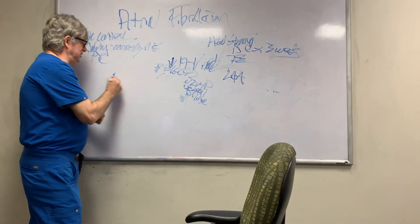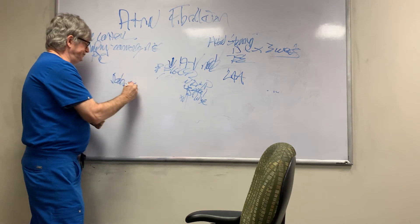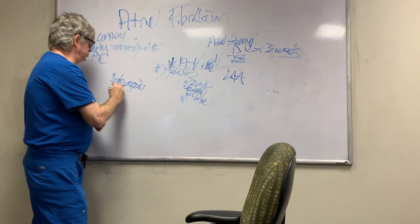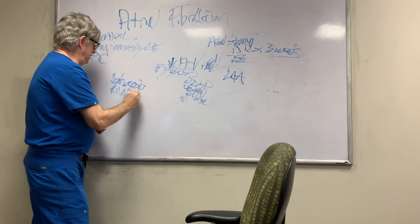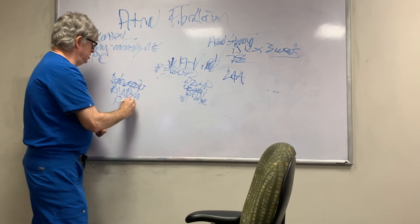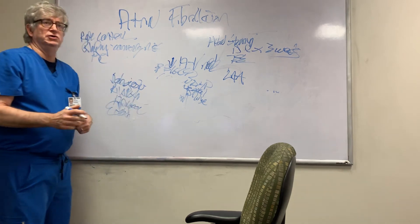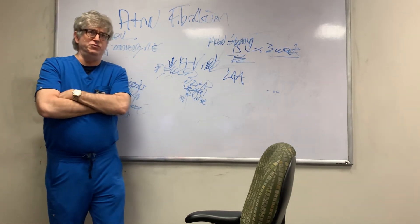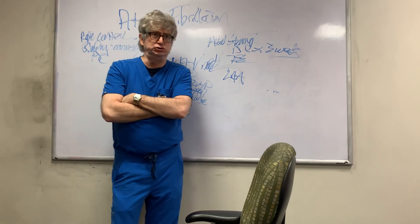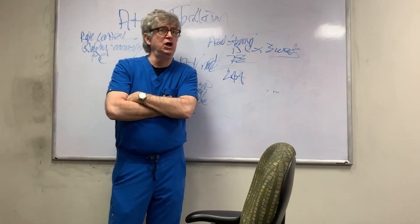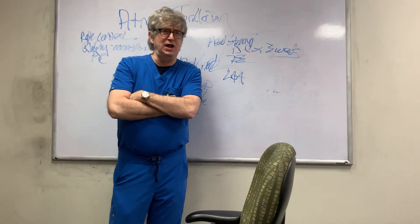There are four DOACs: dabigatran, rivaroxaban, apixaban, and edoxaban. Any of these medicines could be used to treat atrial fib for stroke prophylaxis. And they all work.